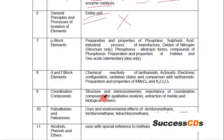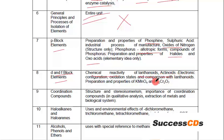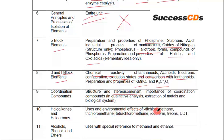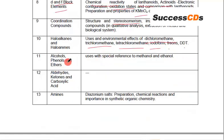The entire chapter on General Principles and Processes of Isolation of Elements has been deleted. From P-Block Elements: preparation and properties of phosphine, sulfuric acid industrial processes of manufacture, oxides of nitrogen, phosphorus allotropic forms, compounds of phosphorus, and preparation and properties of halides and oxo acids (elementary idea only) — deleted. From D and F Block Elements: chemical reactivity of lanthanoids, actinoids, electronic configuration, oxidation states and comparison with lanthanoids, and preparation and properties of KMnO₄ and K₂Cr₂O₇ — deleted. From Coordination Compounds: structure and stereoisomerism, and importance of coordination compounds — deleted. From Haloalkanes and Haloarenes: uses and environmental effects of dichloromethane, trichloromethane, tetrachloromethane, iodoform, freons, and DDT — deleted. From Alcohols, Phenols and Ethers: uses with special reference to methanol and ethanol — deleted.